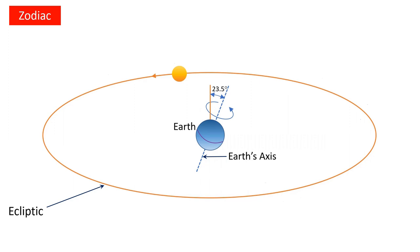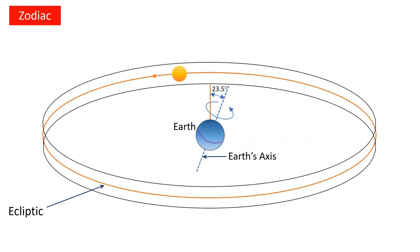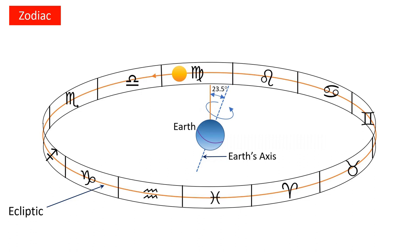The zodiac, or Bhachakra in Sanskrit, is an area of the heavens that extends about 9 degrees on either side of the ecliptic. This zodiac belt is divided into 12 equal parts of 30 degrees each longitudinally, called zodiac signs or Rashis, as I am showing you on the screen now. If you are interested in finding out more about the zodiac and zodiac signs, I have explained it in separate videos.